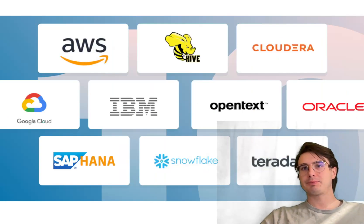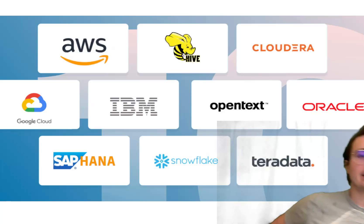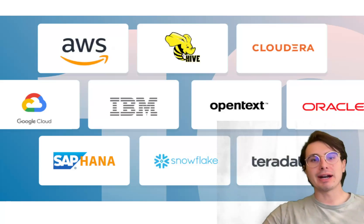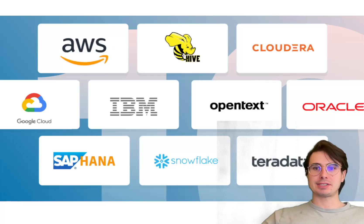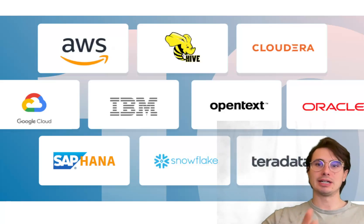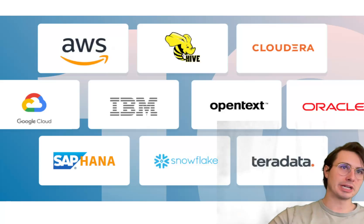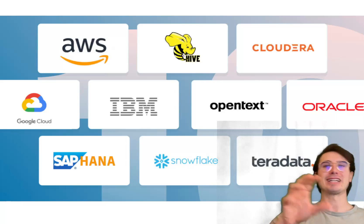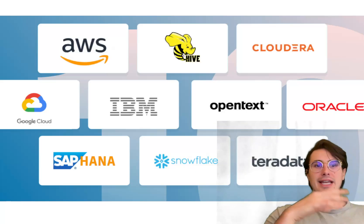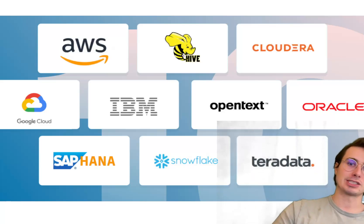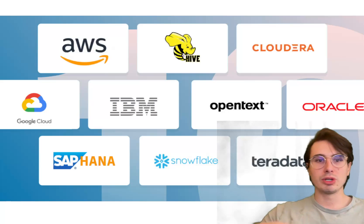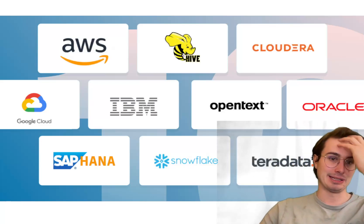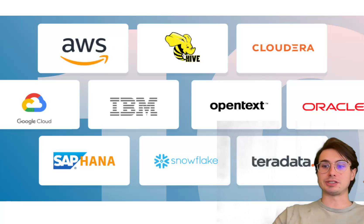Once you have experience building basic data pipelines, it's time to move to phase three and take it to the cloud. Start familiarizing yourself with popular cloud data warehousing solutions like Amazon Redshift, Google BigQuery, and Snowflake. These warehouses are optimized for analytical queries and are easily scalable as data grows. Practice loading data, organizing tables, and writing complex queries for fast and efficient data retrieval.